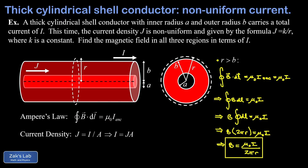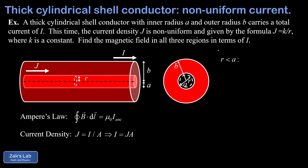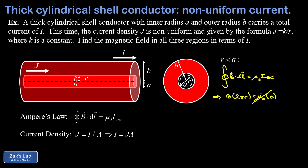Now let's look at the r less than A case — inside the hollow part of this thick conductive shell. We start again by writing down Ampere's law. The left-hand side reduces to the same B times 2πr for all the same symmetry reasons. But this time, the enclosed current is zero — we're not enclosing any conductive material at all. So I_enclosed equals zero on the right-hand side, the entire right side vanishes, and we find that B equals zero.